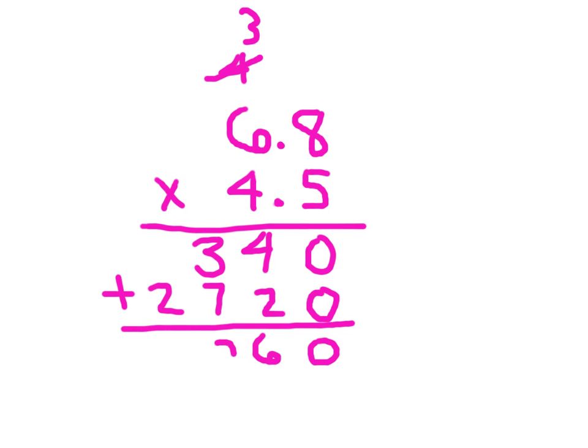3 plus 7 is 10. Place the 0, regroup the 1. 3. 2 decimal places, 2 decimal places.